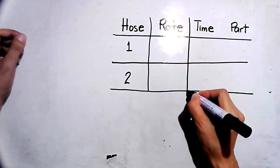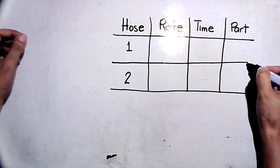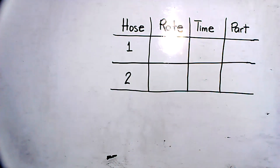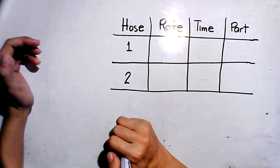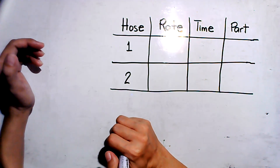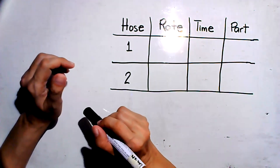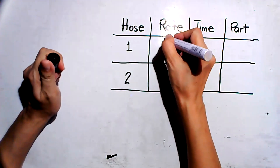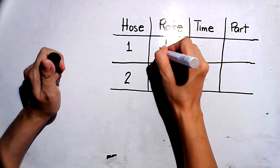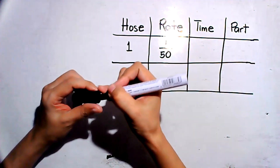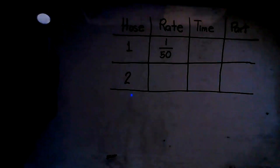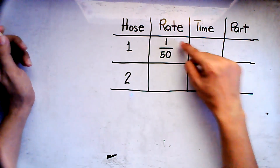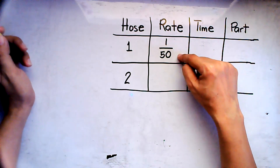We are going to identify the various data from the given problem. For hose number one, according to the problem, one hose can fill a goldfish pond in 50 minutes. So the rate of work of that hose is one over 50 minutes — meaning it can fill one pond per 50 minutes.